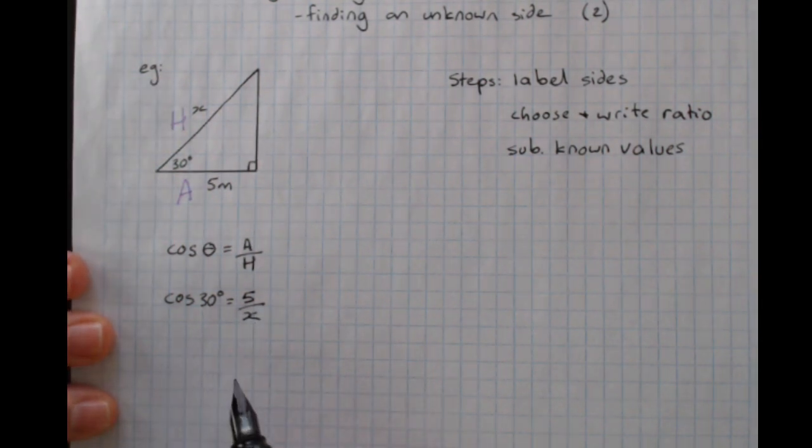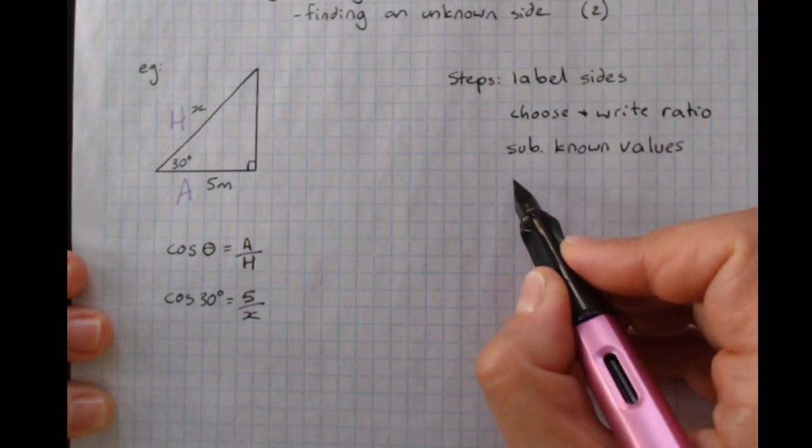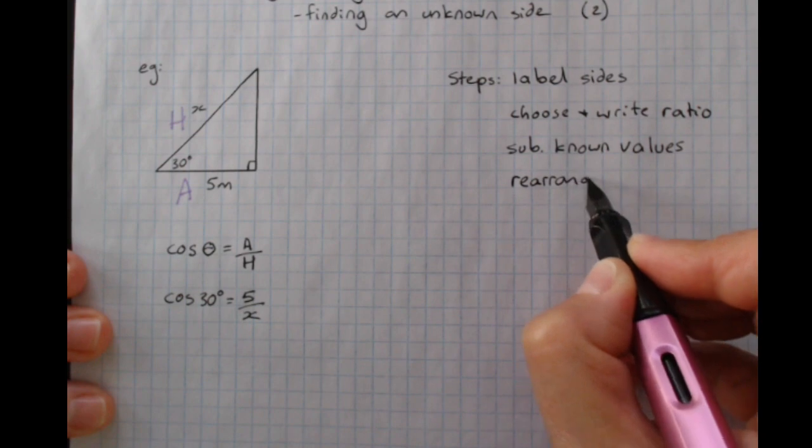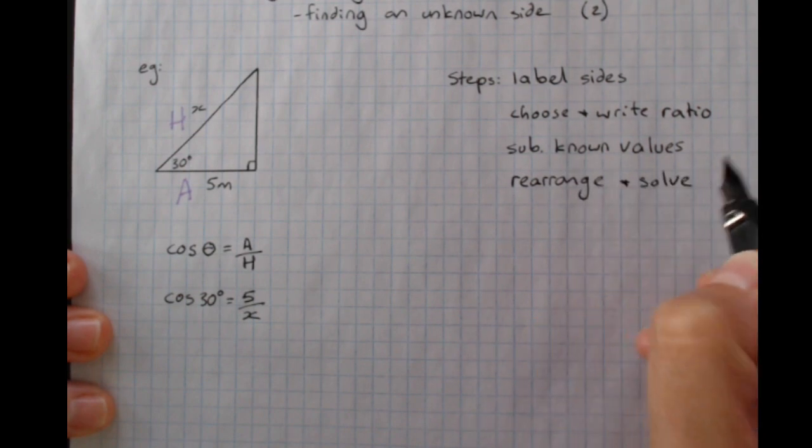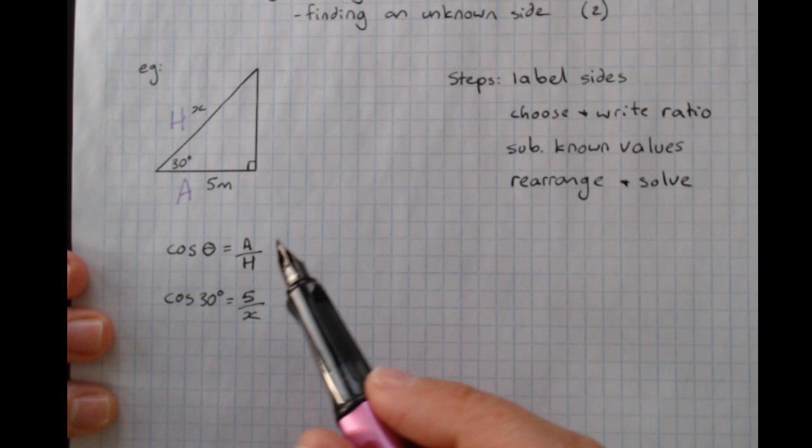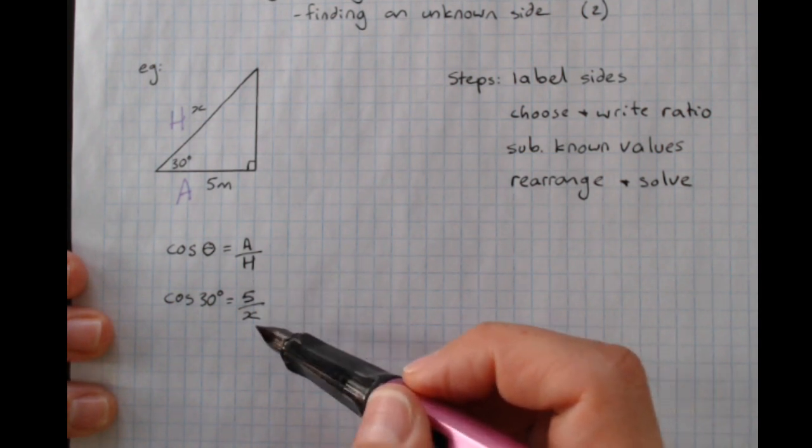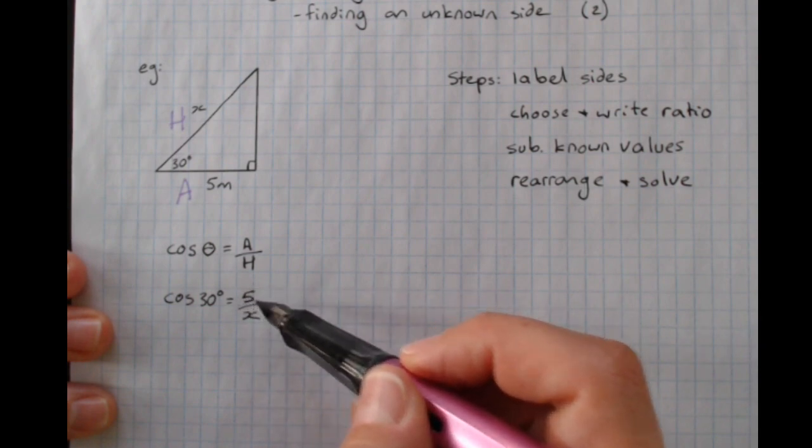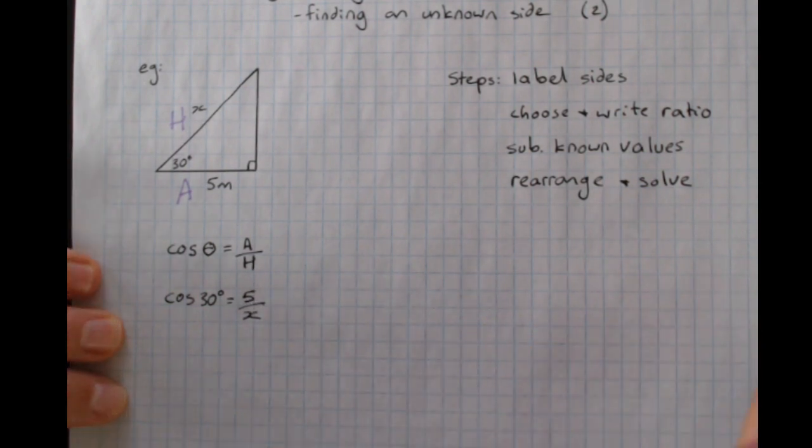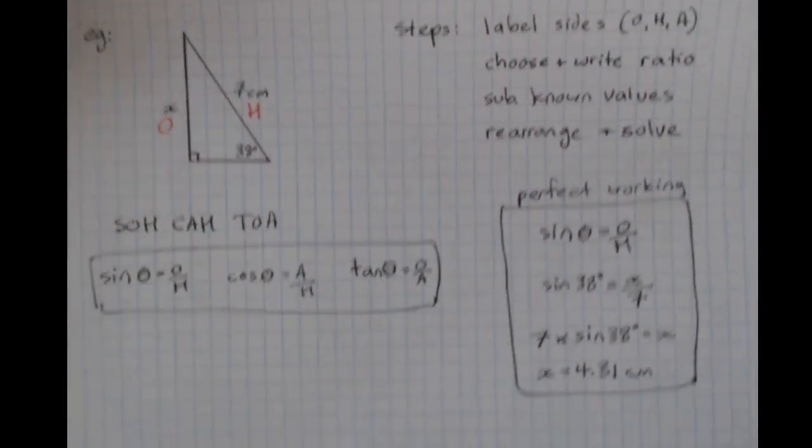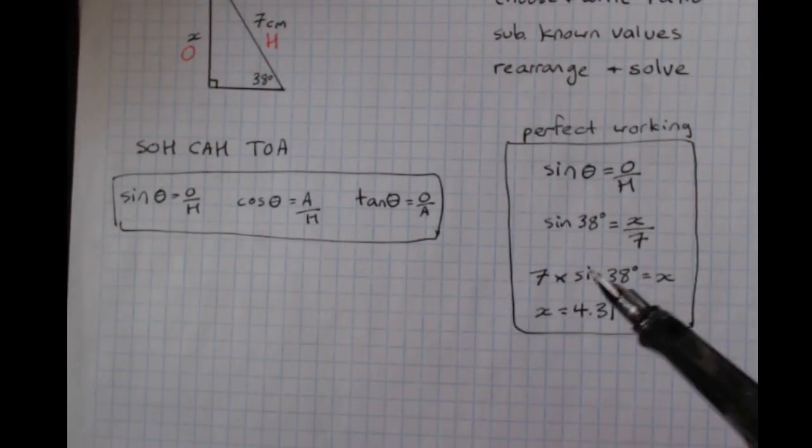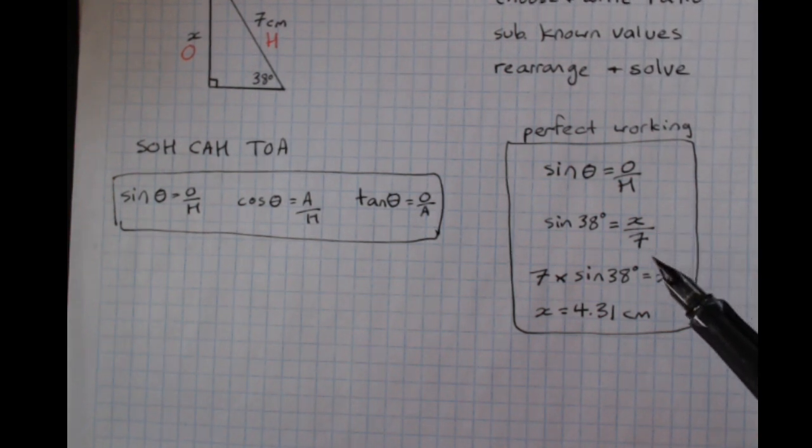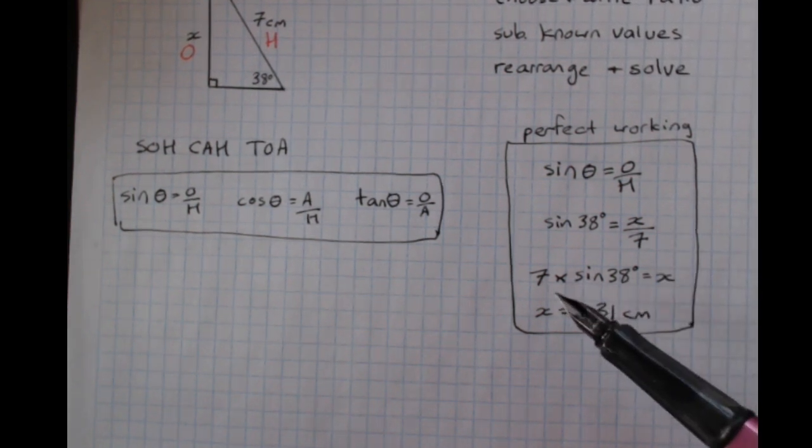Now here is where it looks different to the last examples that I've shown you. The last step is still rearrange and solve. But, x is on the bottom. We can't just deal with this 5 in the same way that we used to. So with this previous problem, I had x over 7 divided by 7 is really easy to change. We do times by 7 on the other side.